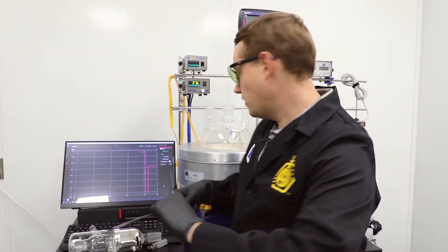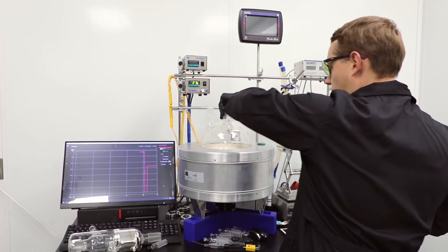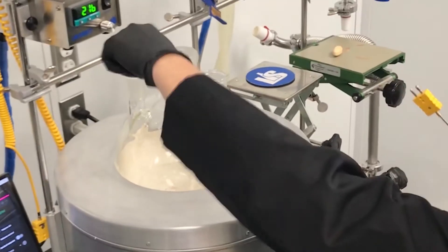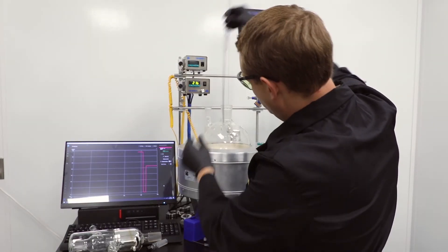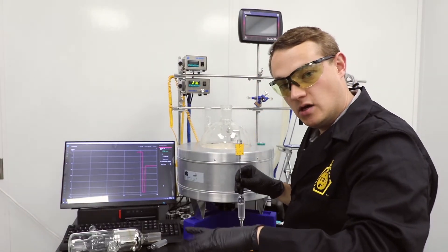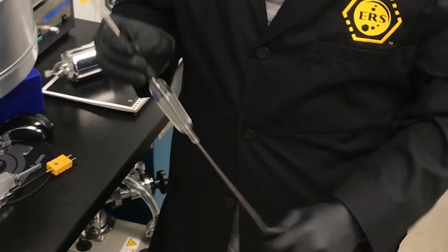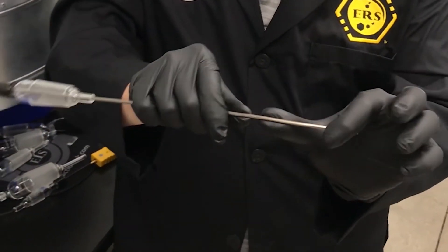Now I want to kind of eye this up. My port for the thermocouple is on the back here. What I want to do is make sure that I'm basically as deep in the flask as I possibly can while not hitting the stir bar and also not hitting the glass, because if I'm hitting the glass I'm not getting a super accurate reading.